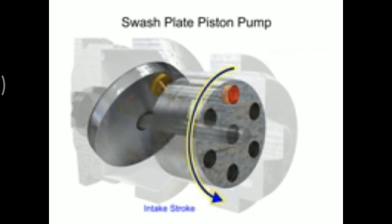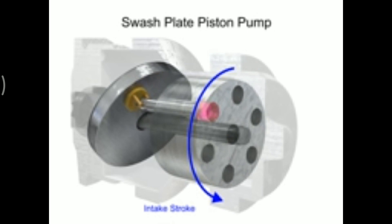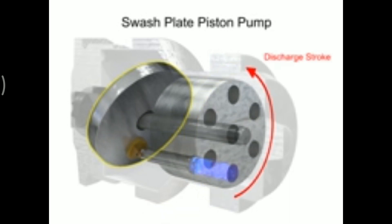On the intake stroke, a spring ensures the pistons pull back and maintain contact with the swash plate, causing fluid to fill the empty cavity left behind. On the discharge stroke, the angle of the swash plate forces the pistons back inside the piston block and discharges the fluid. The greater the slant on the swash plate, the further the pump pistons move and the more fluid they transfer.